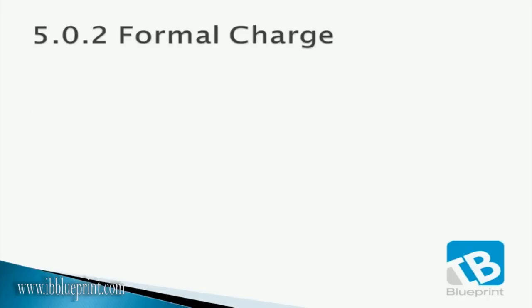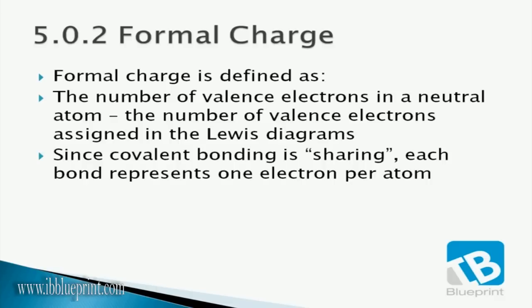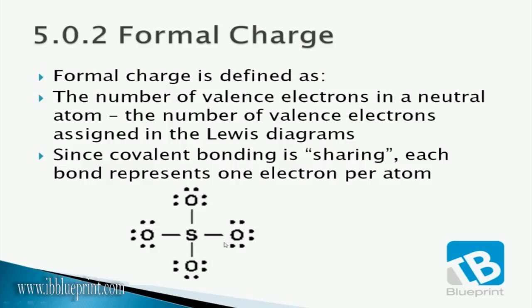Now let's look at formal charge, defined as the number of valence electrons in a neutral atom minus the number of valence electrons assigned in the Lewis diagram. Since covalent bonding is sharing, each bond represents one electron per atom. For sulfur in SO₄²⁻ before assigning double bonds: for oxygen we have six in its neutral state, but seven are assigned in the Lewis structure, giving a formal charge of negative one (six minus seven equals −1). For sulfur, six in its neutral state minus four (one from each single bond) gives a formal charge of plus two.